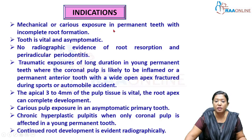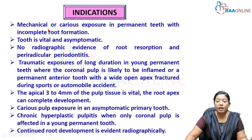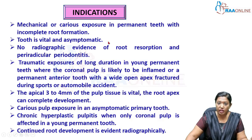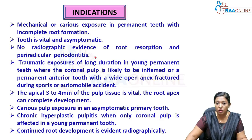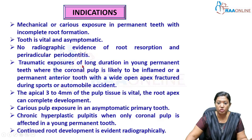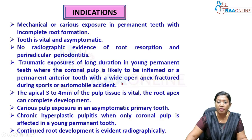The indications for pulpotomy include: first, mechanical or carious exposure in permanent teeth with incomplete tooth formation where the tooth is vital and asymptomatic. Second, no radiographic evidence of root resorption or periradicular periodontitis — meaning no radiolucency or periapical changes visible on the intraoral periapical radiograph. Third, traumatic exposure of long duration in a young permanent tooth where the coronal pulp is likely inflamed, such as crown fractures from road traffic accidents, automobile accidents, or sports injuries.